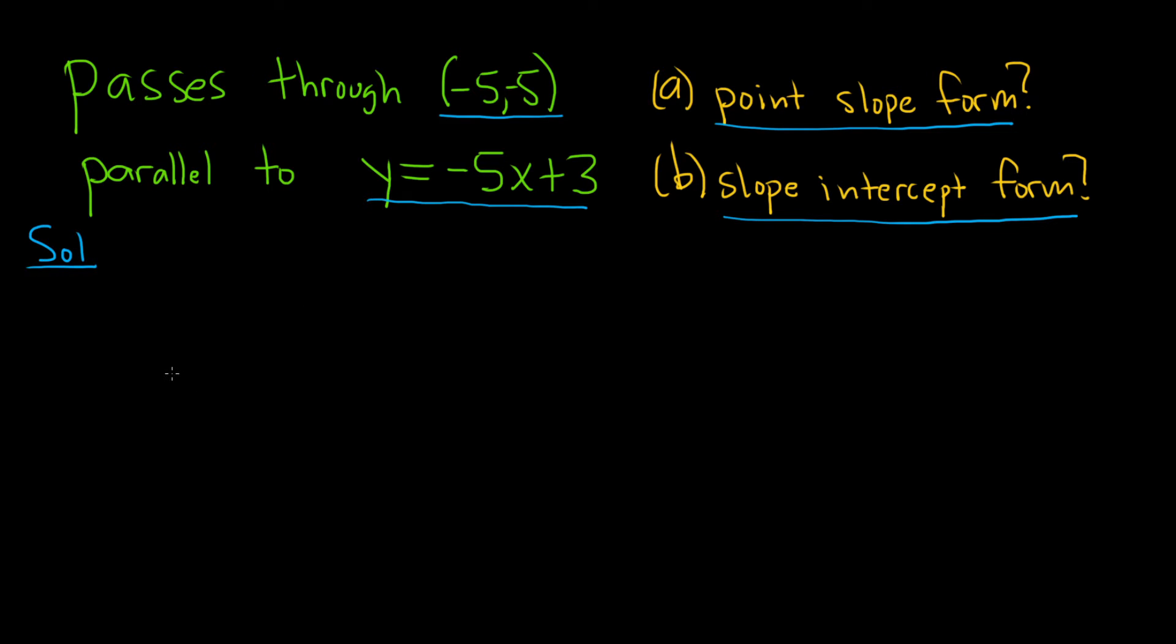To find the equation of a line in point-slope form, we just need a point and a slope. We already have the point that's given to us, so negative 5 comma negative 5. We just need the slope, which is m.